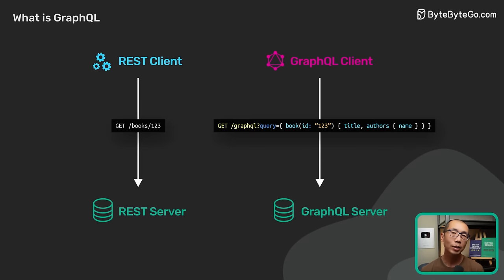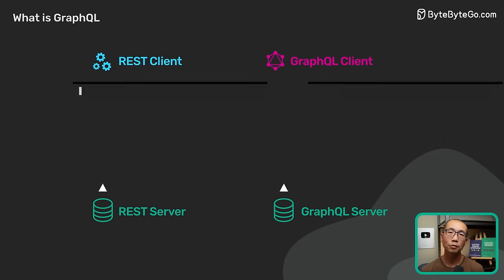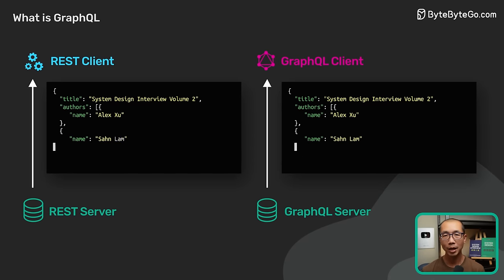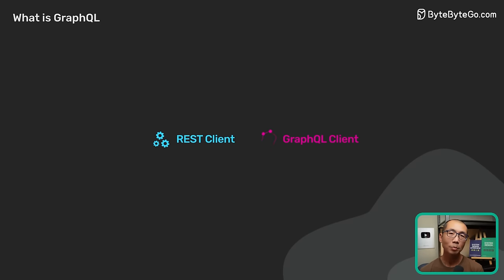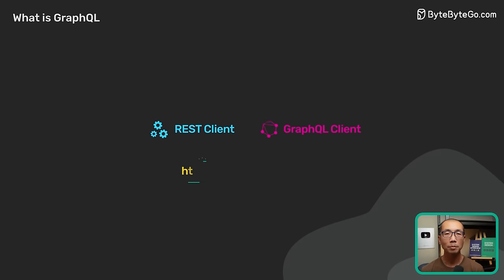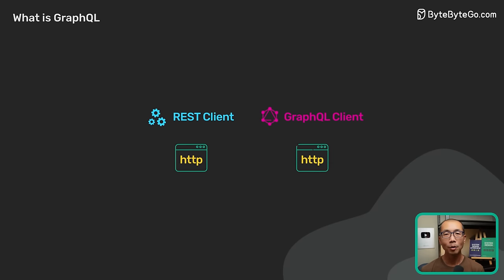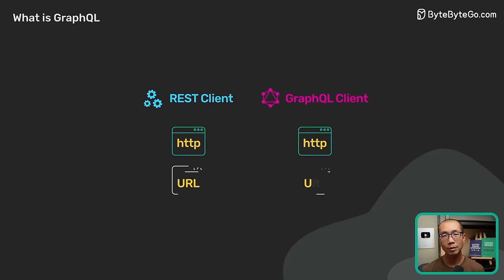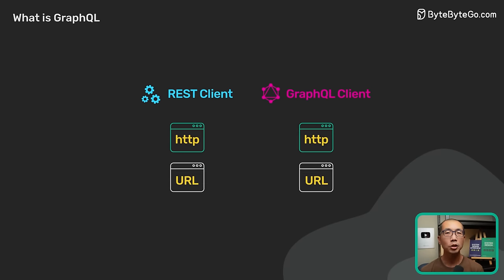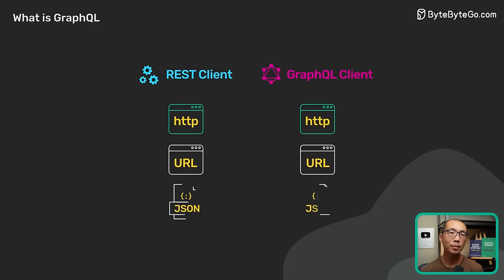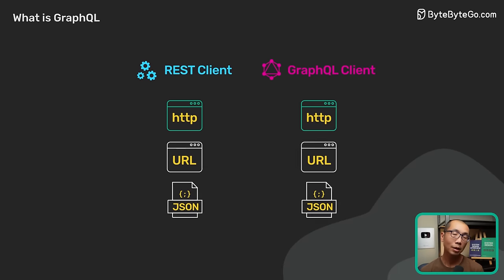Now we can send a request to the GraphQL endpoint to fetch the same data. As we can see, REST and GraphQL both use HTTP. Both make a request via a URL, and both can return a JSON response in the same shape.